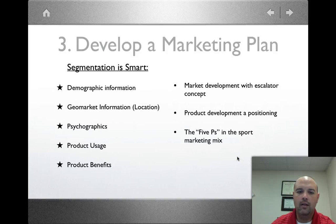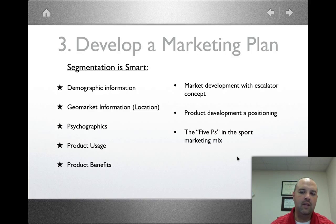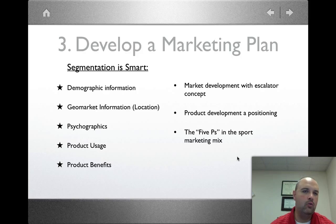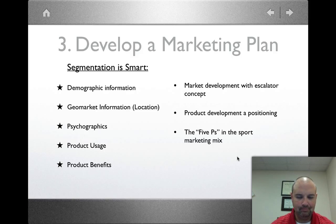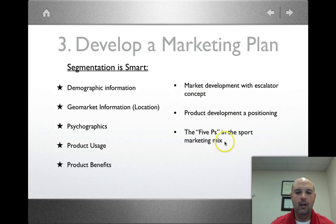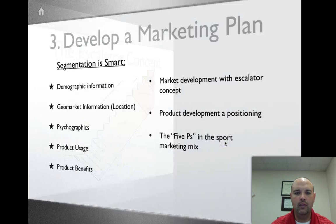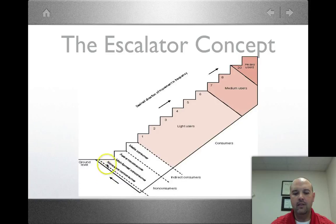For your marketing plan, you can segment by demographics — males, females, different races, ethnicities — by location, or by psychographics, meaning how and why people use a product. For example, do you go to a game because you want entertainment, because you're a fan, or because your boyfriend or girlfriend goes? There are different reasons for everybody. We'll talk about the escalator concept — we start by segmenting who we're dealing with.